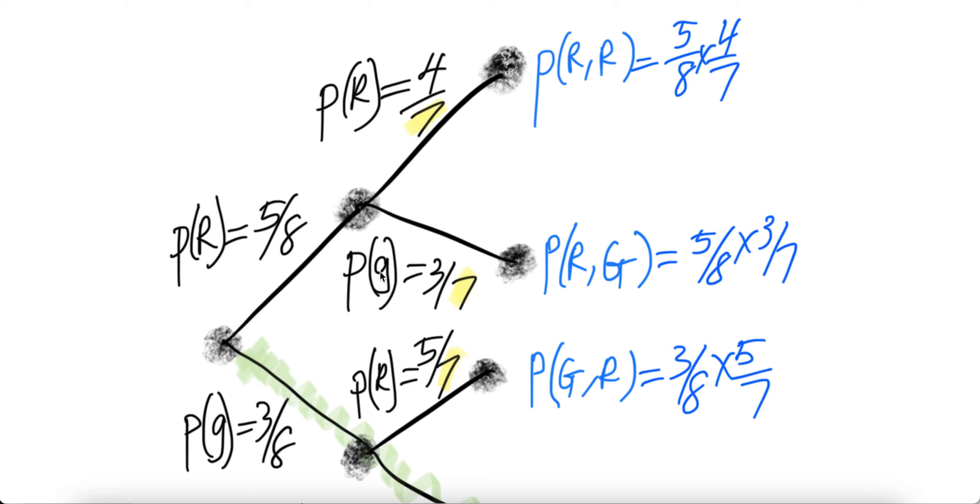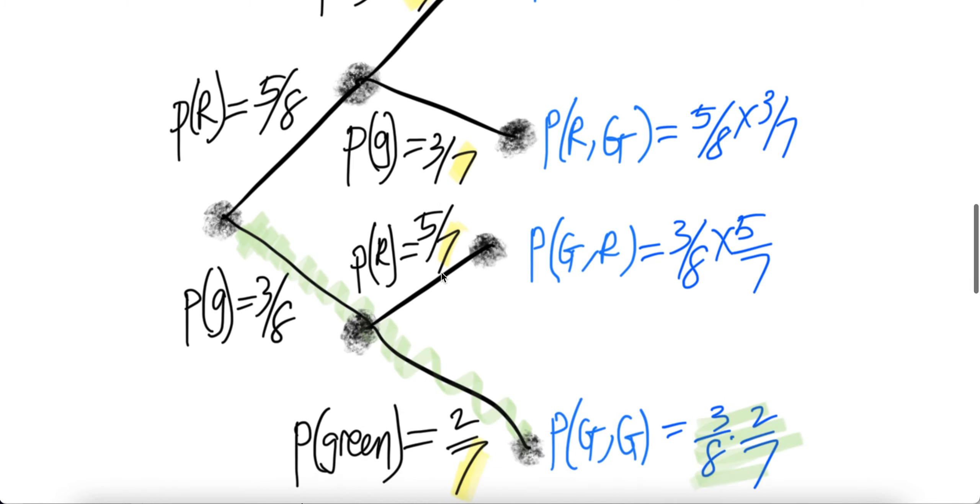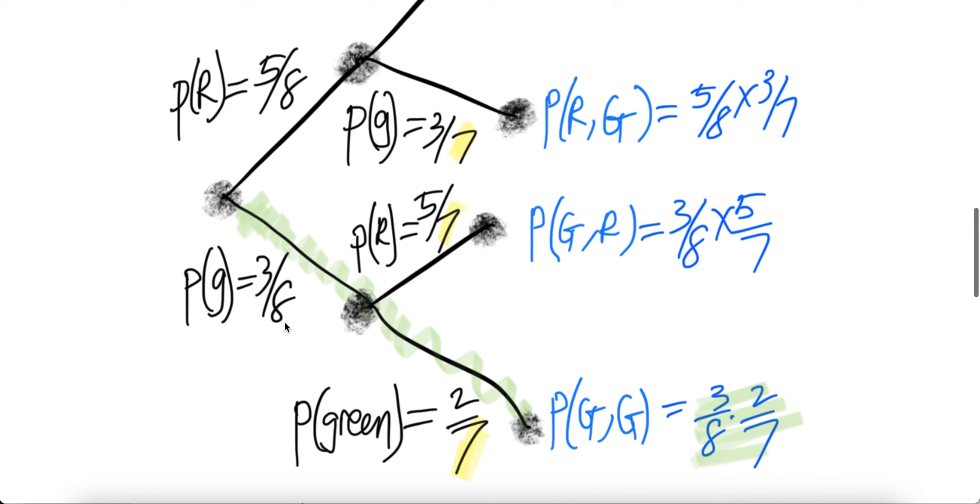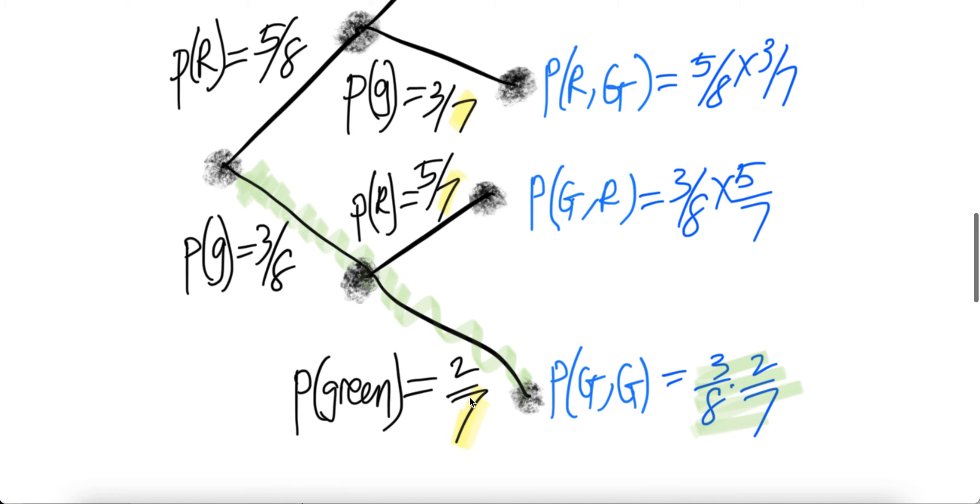Similarly here, green ball is three. And that total number of balls is no more eight, is seven. Here, three over eight. And then here to get a red ball, how many red balls have not been taken out yet. So the total there are five, still have five. And then one is out from the green. So you have seven left. Do the same here, two over seven.